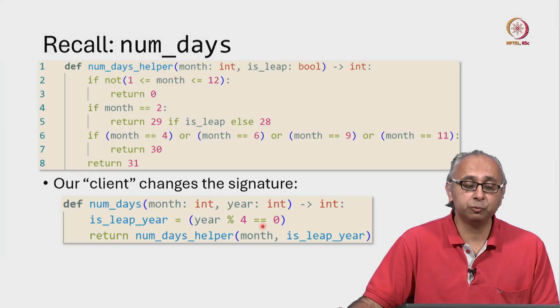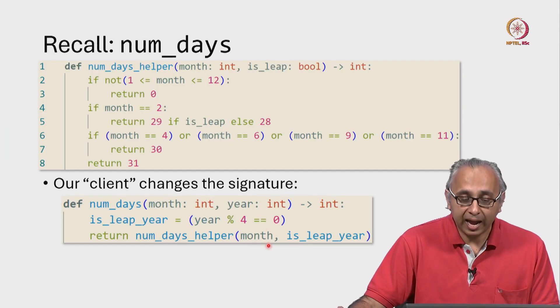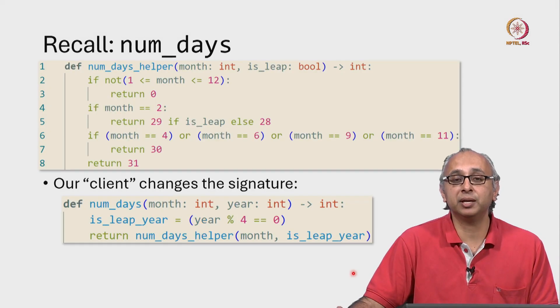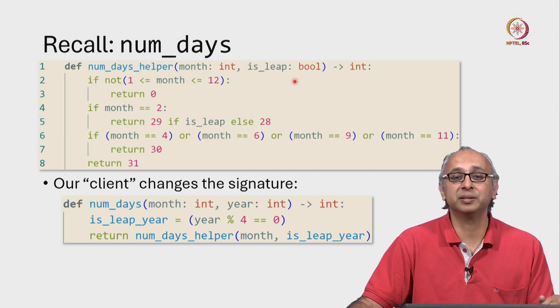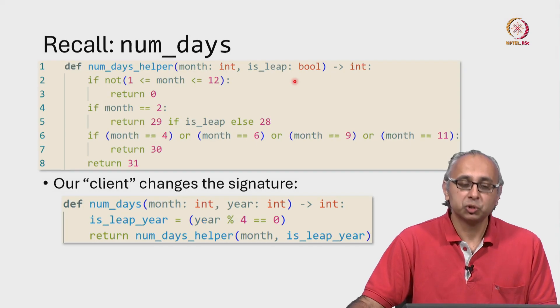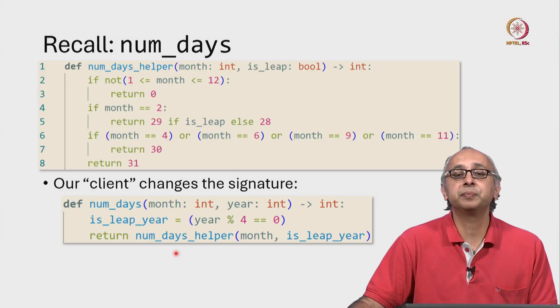Now that we have that value, we can now call the helper function with the given month and with this calculated boolean, because remember the helper function is expecting the month and whether or not the year was boolean. So we have saved our old code and called it at the appropriate place.